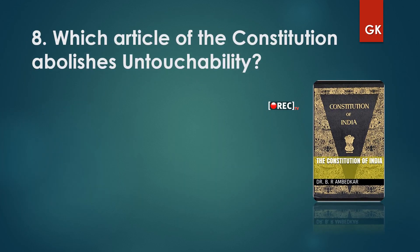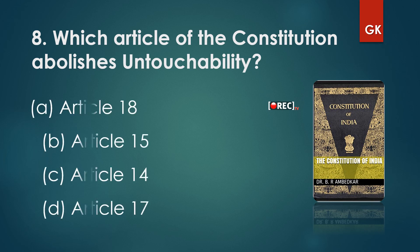Question 8: Which article of the Constitution abolishes untouchability? Options: Article 18, Article 15, Article 14, or Article 17. The answer is Article 17. Article 17 of the Constitution abolishes untouchability.